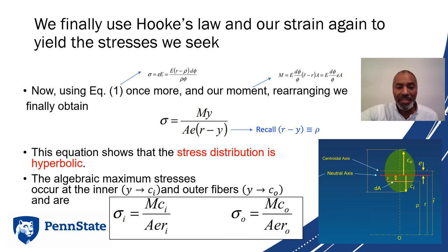The algebraic maximum stresses occur when y goes to ci or y goes to co. That means y goes toward the inner or outer fibers. These are sigma i equals mci over a e ri, and sigma o equals mco over a e ro. This important bit about the eccentricity pops up once again.